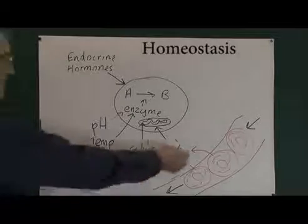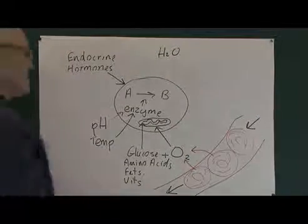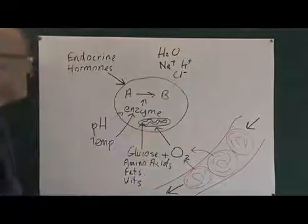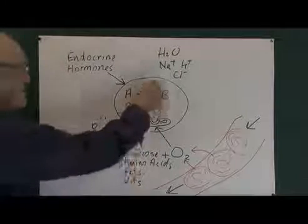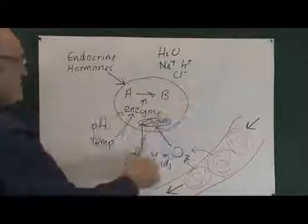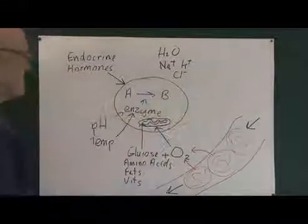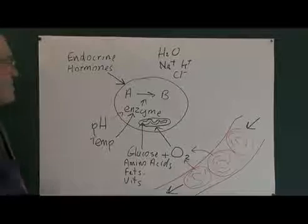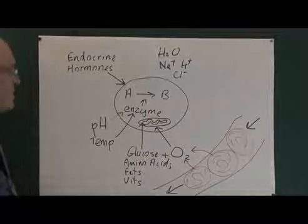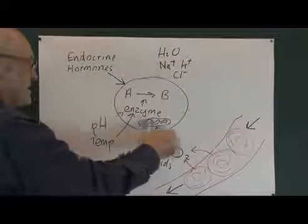Also, the cellular environment needs to contain the right amount of water and the right amount of electrolytes such as sodium, potassium, and chloride ions — all the other electrolytes need to be present in just the right amount. If there's too much water in the extracellular fluid, water will tend to diffuse into the cells and blow them up. Conversely, if there's not enough water — if the patient is dehydrated — osmosis will mean that water will tend to diffuse from the cell into the tissue spaces, resulting in dehydrated cells.